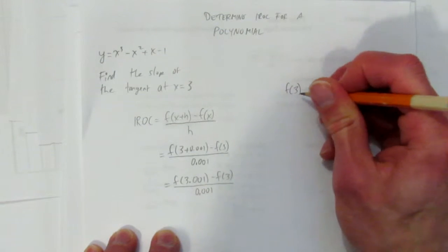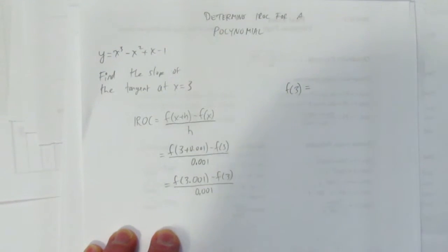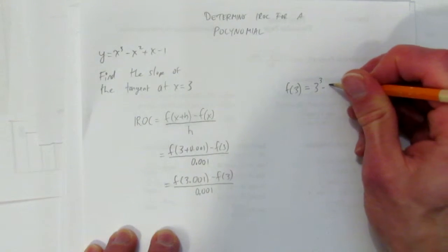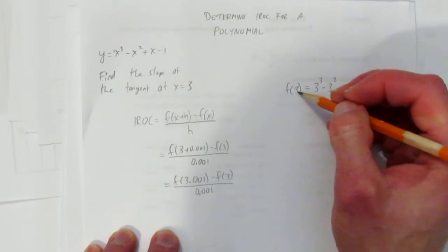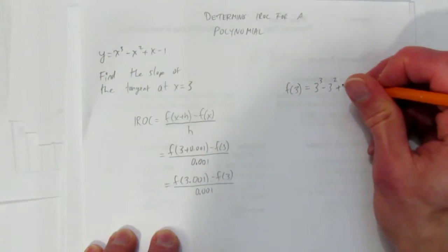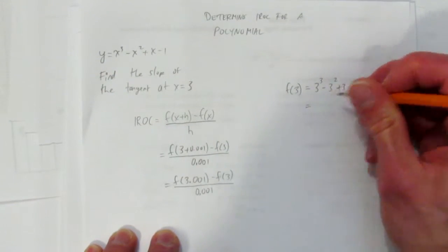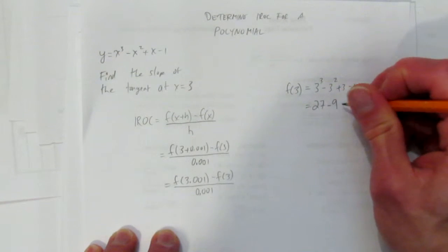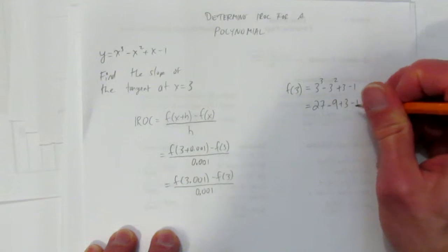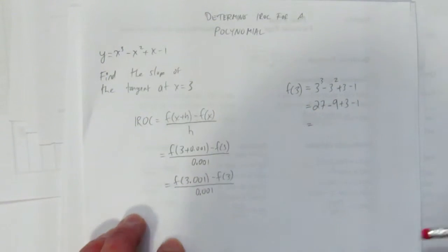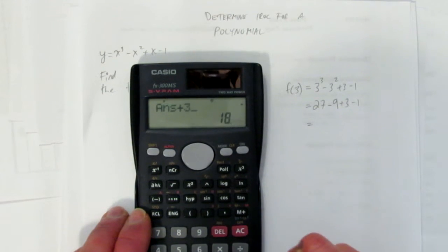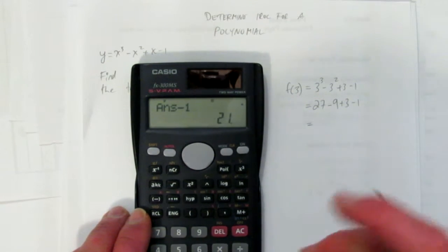Let's calculate f at 3 first. What's f at 3? Well, that's going to be 3 cubed minus 3 squared—I'm just subbing 3, the number, into this equation—plus 3 minus 1. You can use a calculator if you want. 3 cubed is 27, minus 3 squared, which is 9, plus 3 minus 1. I'll use a calculator just to check as I'm going. 27 take away 9, that's 18. Plus 3 is 21. Take away 1 is 20.